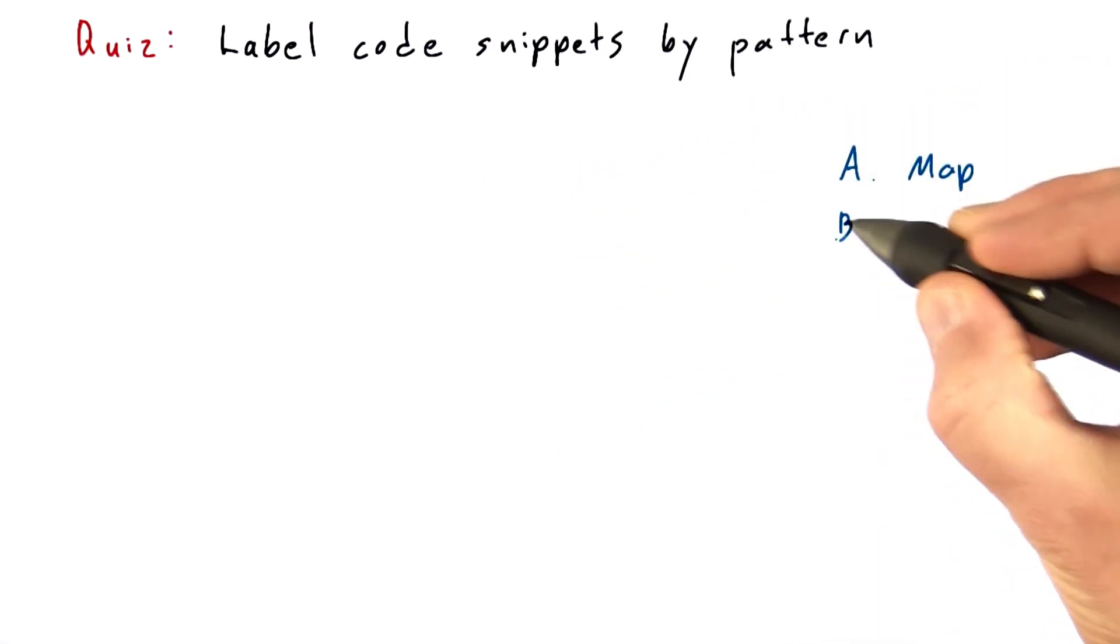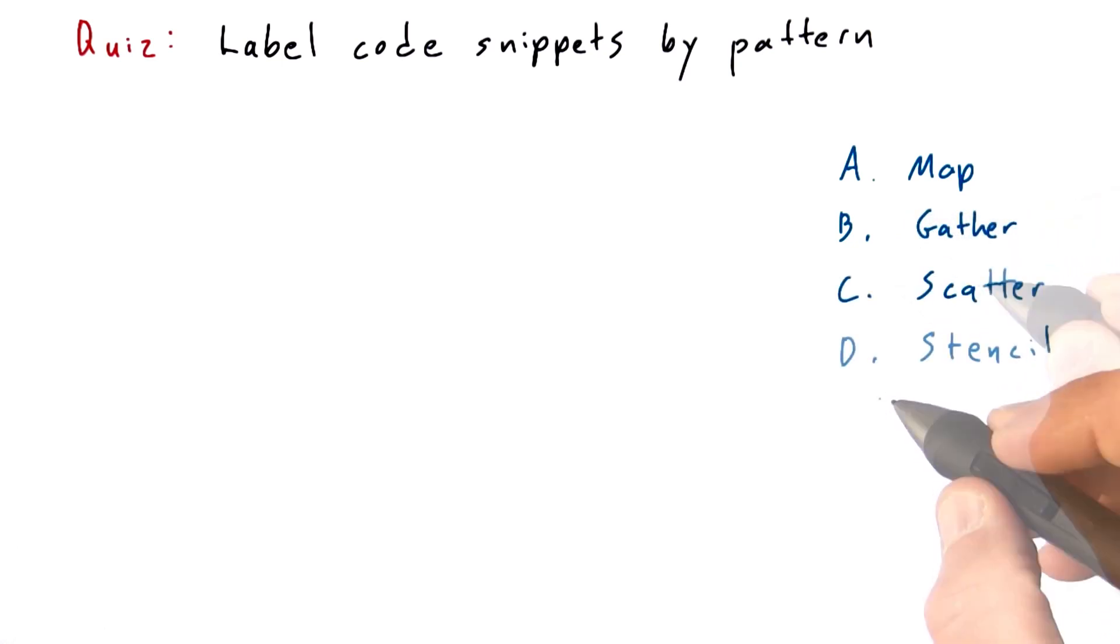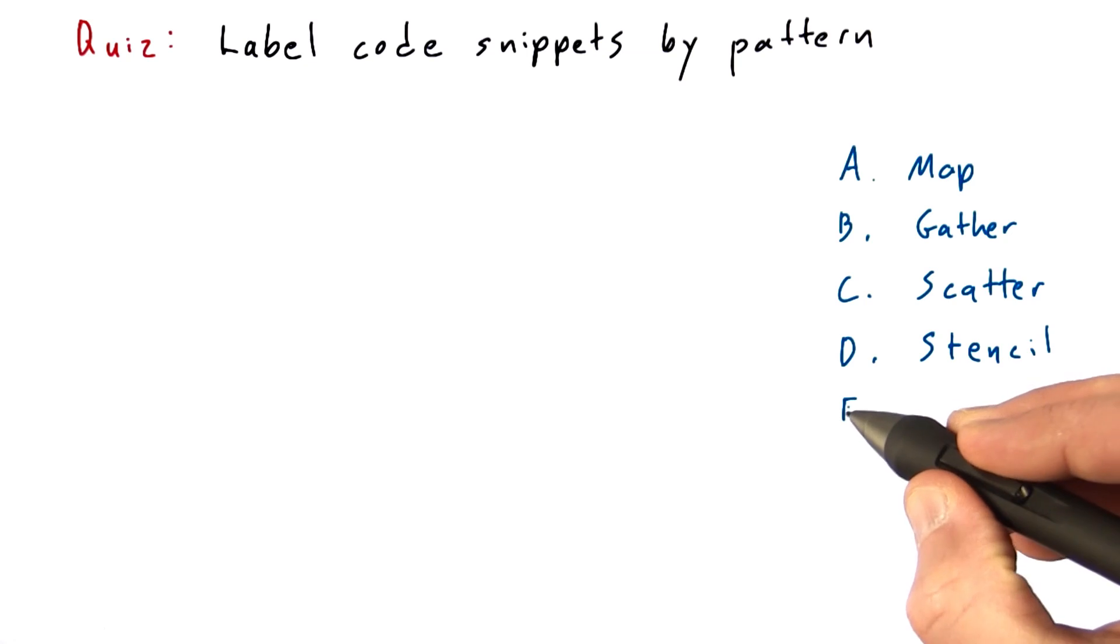For each code snippet, you should indicate whether it's a map operation, a gather operation, a scatter operation, a stencil operation, or a transpose operation.